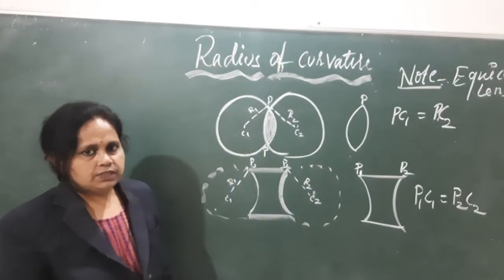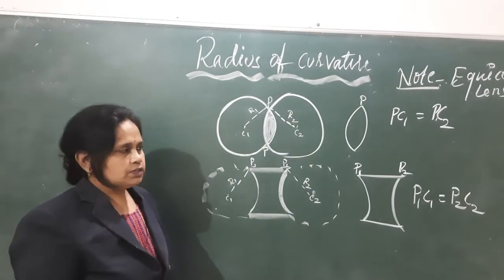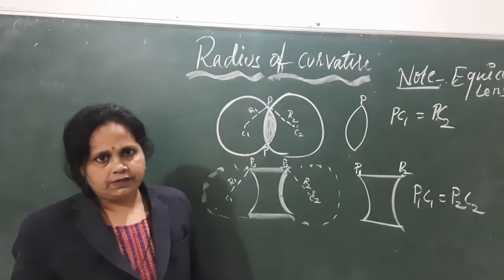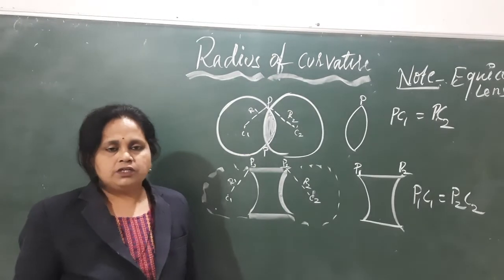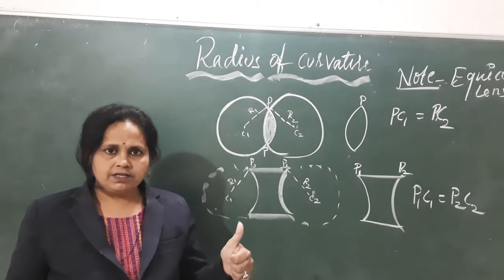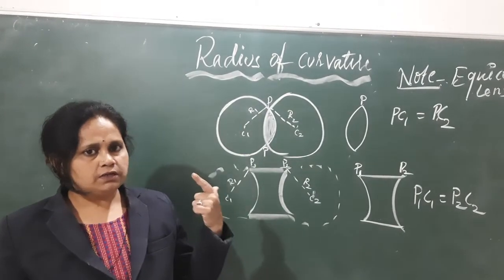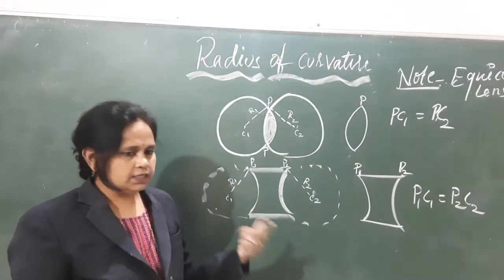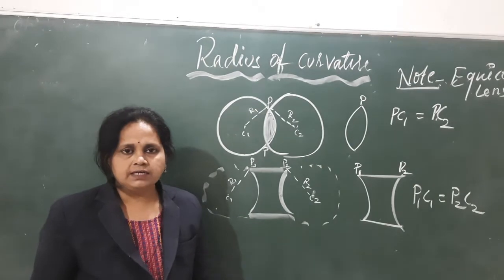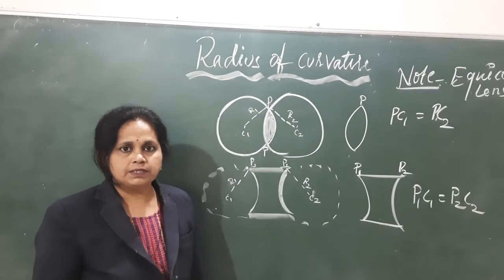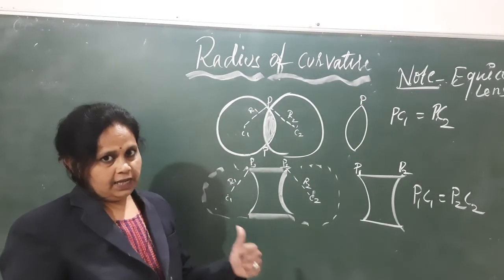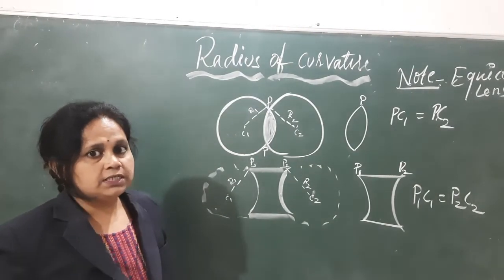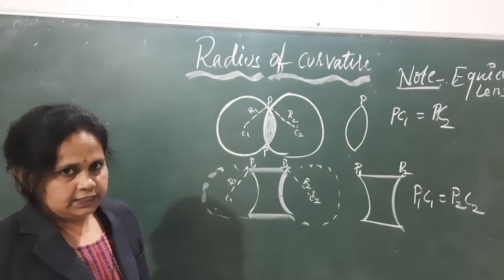Have you understood this clearly? So this is all about radius of curvature. We have finished center of curvature and radius of curvature. In the next part, we will understand the principle axis — please see what the principle axis is.